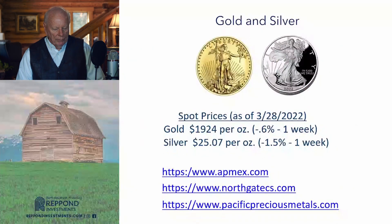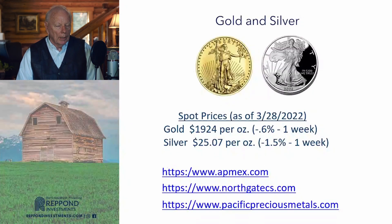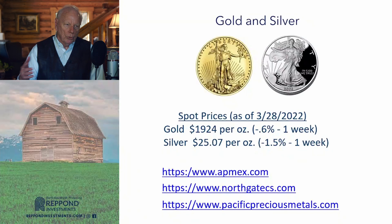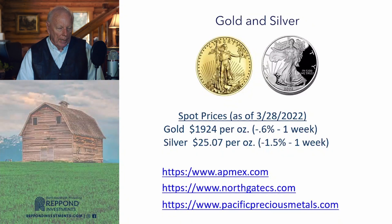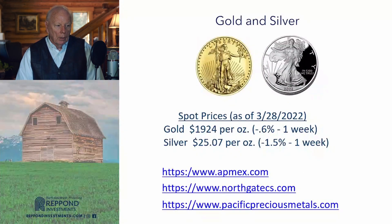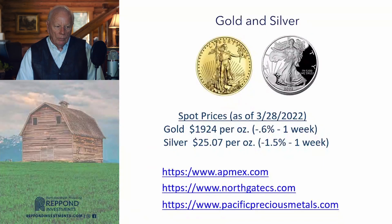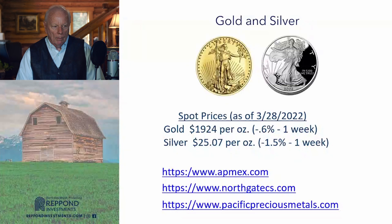As of yesterday, March 28th, gold is at $1,924, down less than 1% from a week ago. Silver is at $25.07, down about 1.5% from a week ago. Both have pulled back after being on an upward trajectory.